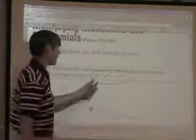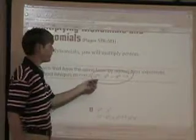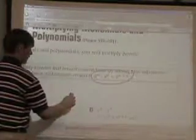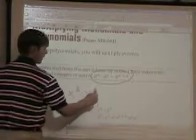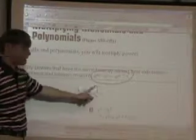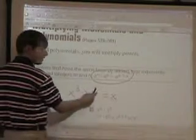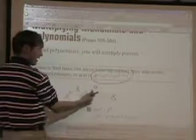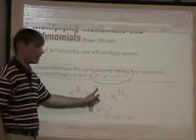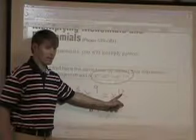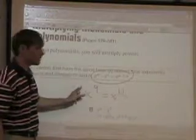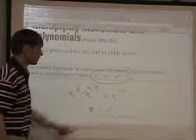The most important part is if you have two different monomials — let's say x to the third times x to the ninth. When you multiply, you don't multiply the exponents. What do you do with the exponents? You add them. Nine plus three is twelve, so this is going to be x to the twelfth. It's not x to the twenty-seventh. When you multiply, you add the exponents, so it's x to the twelve.